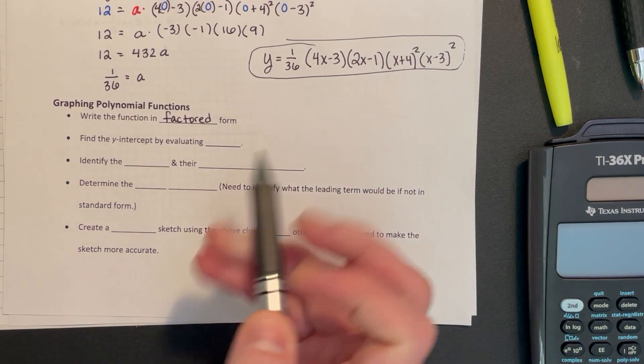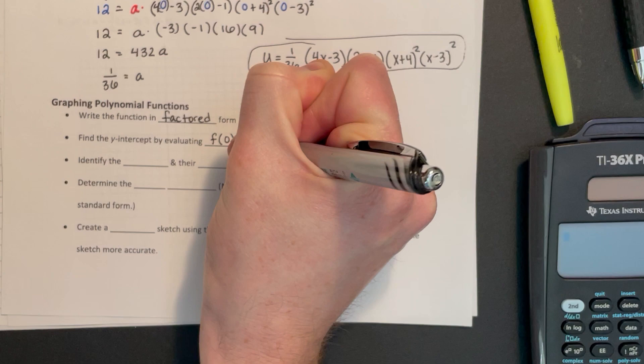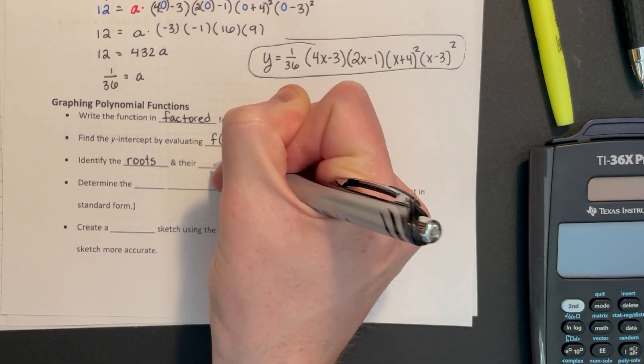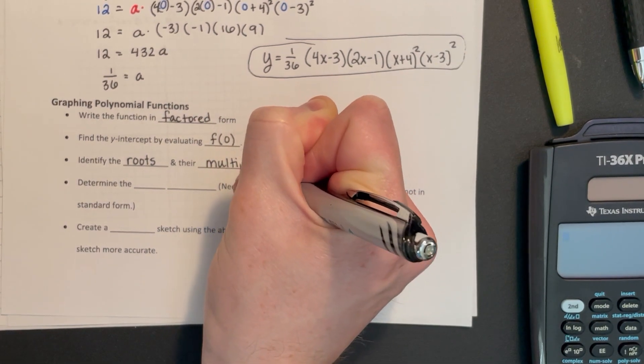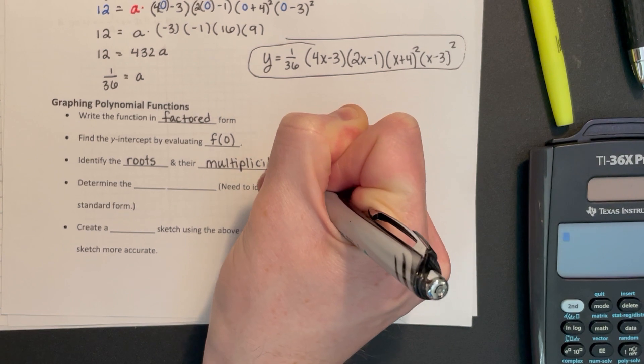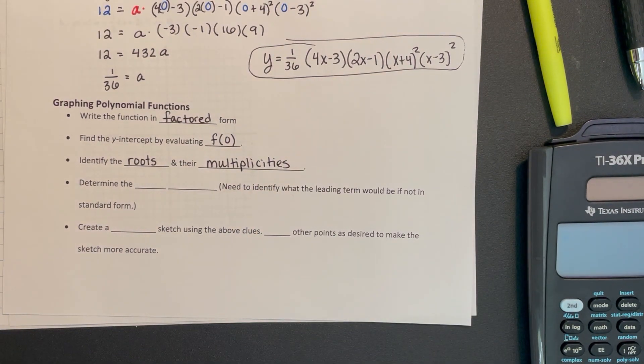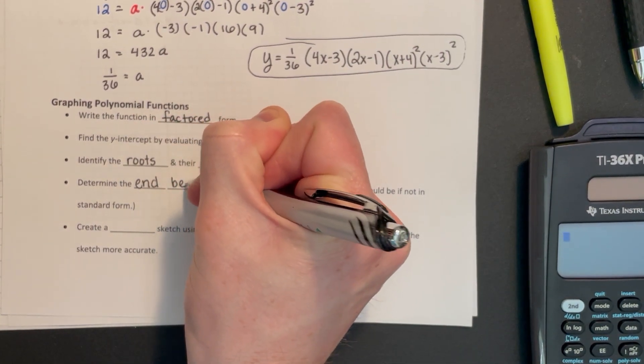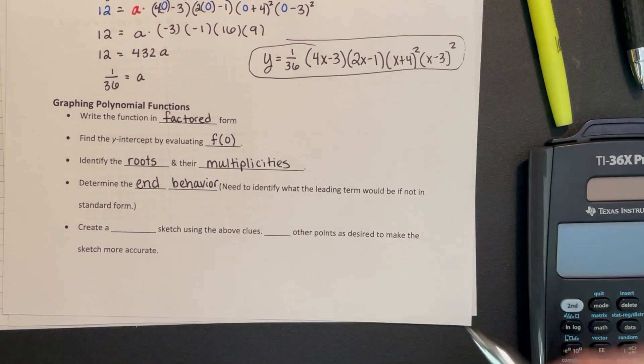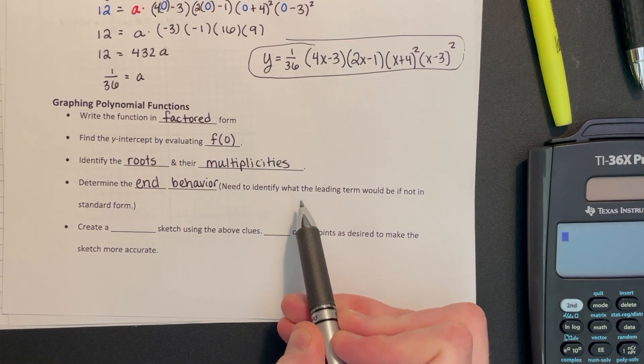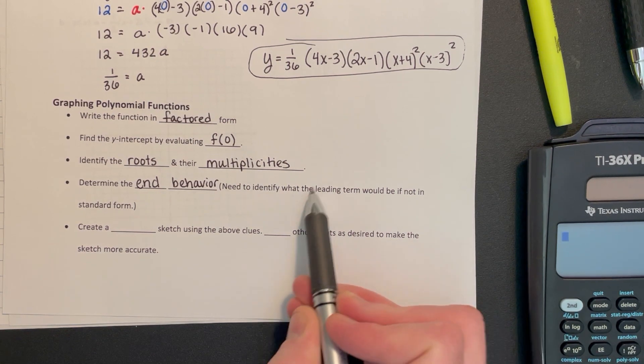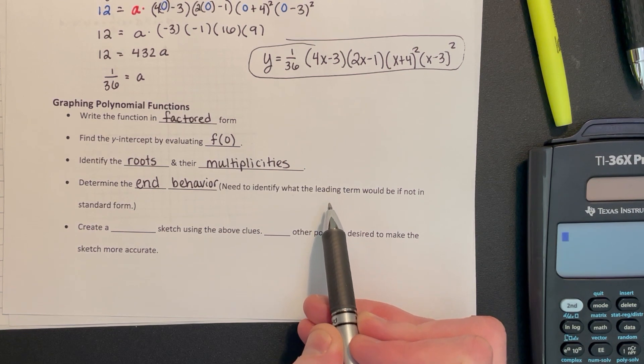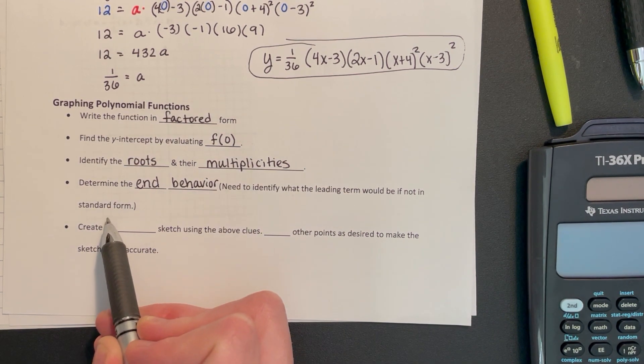We can find the y-intercept by evaluating f of zero. We can also find the zeros or the roots and their multiplicities. The multiplicities will impact the shape of that polynomial, what's going on at that root. We can determine the end behavior. To do that we need to know the degree and the leading coefficient, which come from that leading term. This may or may not be in standard form so we need to consider what that would be if it's in standard form.